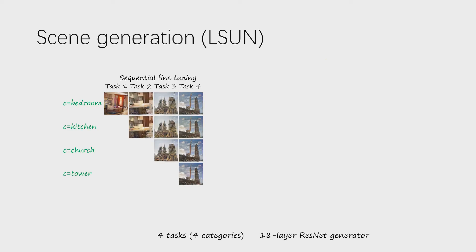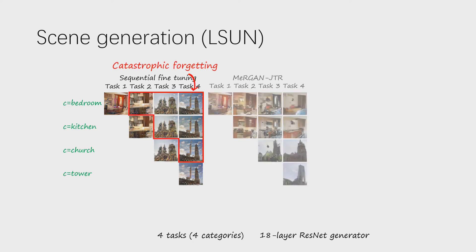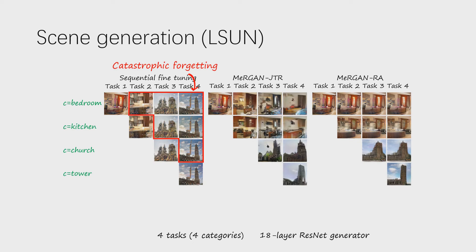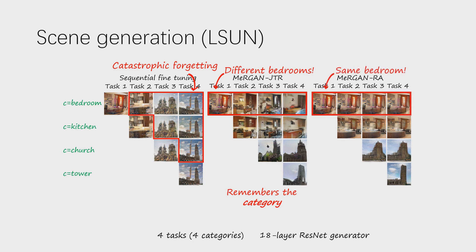In this experiment with four scene categories, sequential fine-tuning suffers from catastrophic forgetting. However, MaGANs are able to successfully generate images from previous categories while learning new ones. Focusing on the bedrooms, we can observe that joint training with replays generates different bedrooms after each task, suggesting that it enforces remembering the category. Interestingly, replay alignment always generates the same bedroom, suggesting that it enforces remembering the instance.